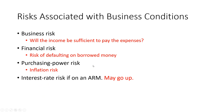The first risk is business risk — will the income be sufficient to pay the expenses of running the business? Financial risk is the risk of defaulting on borrowed money payments. Purchasing power risk is the inflation risk: with a long-term fixed lease, inflation erodes the value of the dollar, so you're being paid in less valuable dollars even though the property stays the same. And interest risk — if you have an adjustable rate mortgage, interest rates may go up.